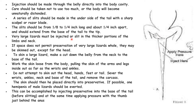For lizard preservation, very large lizards must be injected or slit in the thicker position of the limbs or neck. If the lizard is large in size, injections or slits must be made in the limbs and neck. If the place does not permit preservation of very large lizards, they may be skinned out except for the head.